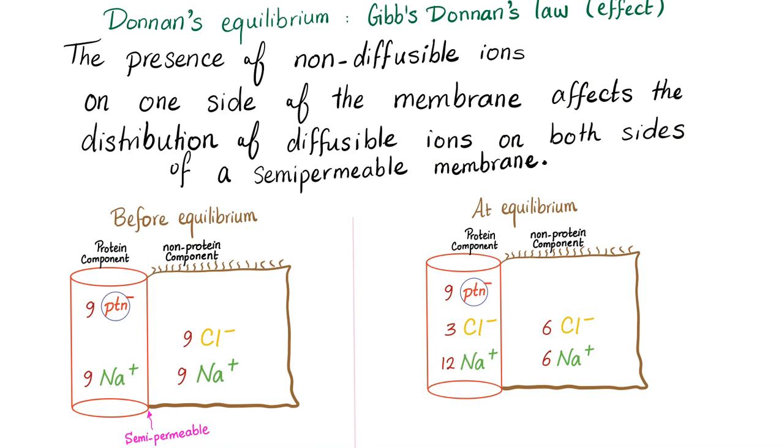Now, the Donnan's equilibrium or the Gibbs Donnan's law or effect. Let me do it like your professor. It's defined as the presence of non-diffusible ions on one side of the membrane. This will affect the distribution of diffusible ions on both sides of the semipermeable membrane. And this is the case before equilibrium, and this is the case at or after equilibrium. Do you understand anything? No.